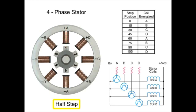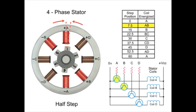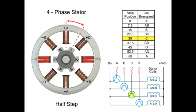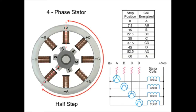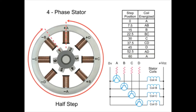For half step mode, the stepper motor's resolution can be doubled by altering the switching of coils. Half stepping occurs when one winding is energized and then two windings are energized alternately, causing the rotor to rotate at half the distance. Switching coils in this combination will rotate in the reverse direction. As you can see in this example, 48 steps are required to make a full rotation at 7.5 degree increments.